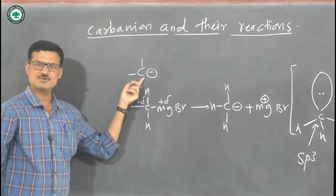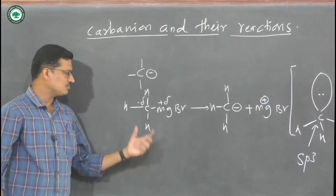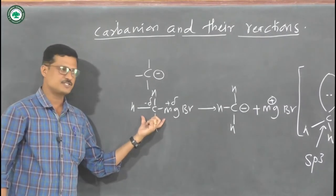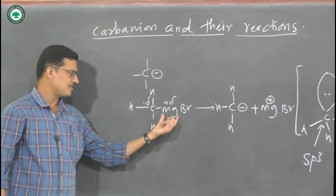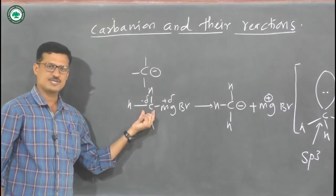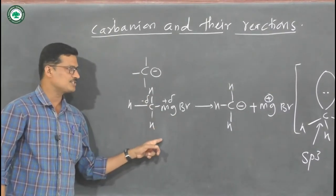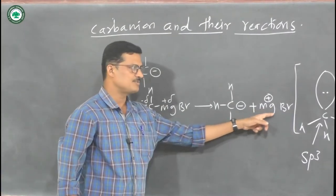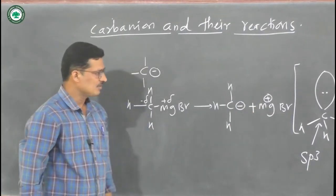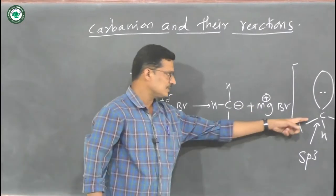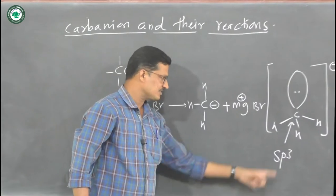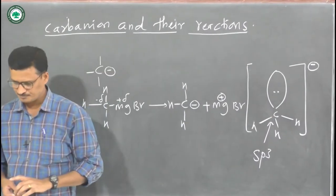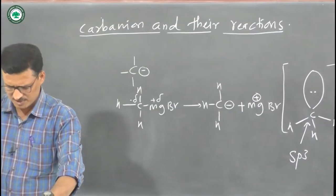So to summarize: carbon with a negative charge is called a carbanion. For carbanion formation, taking the simple example of a Grignard reagent — magnesium is electropositive, carbon is electronegative, the bond between carbon and magnesium breaks, and we get carbon with a negative charge and MgBr with a positive charge. This carbon carrying the negative charge has sp3 hybridization.